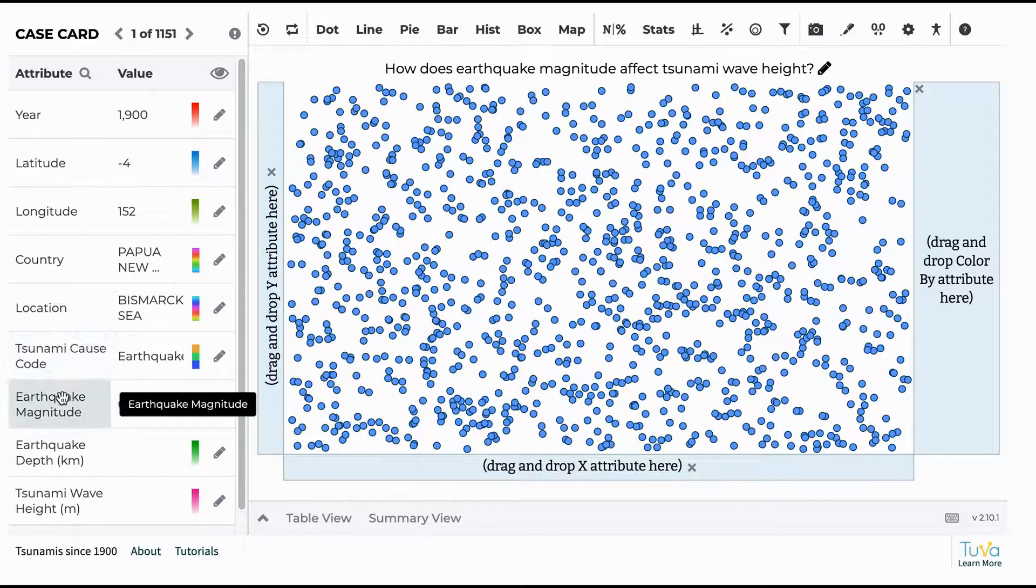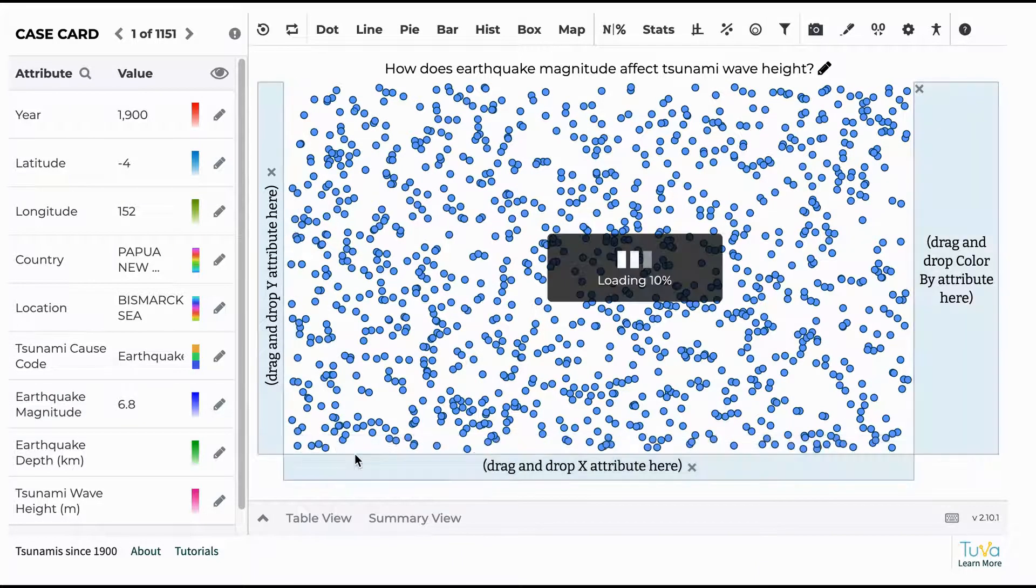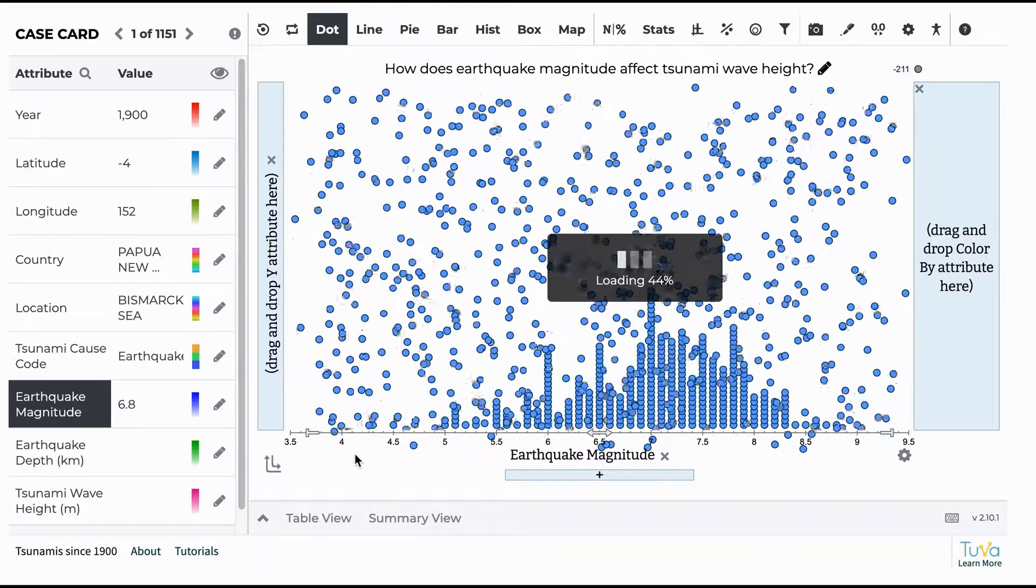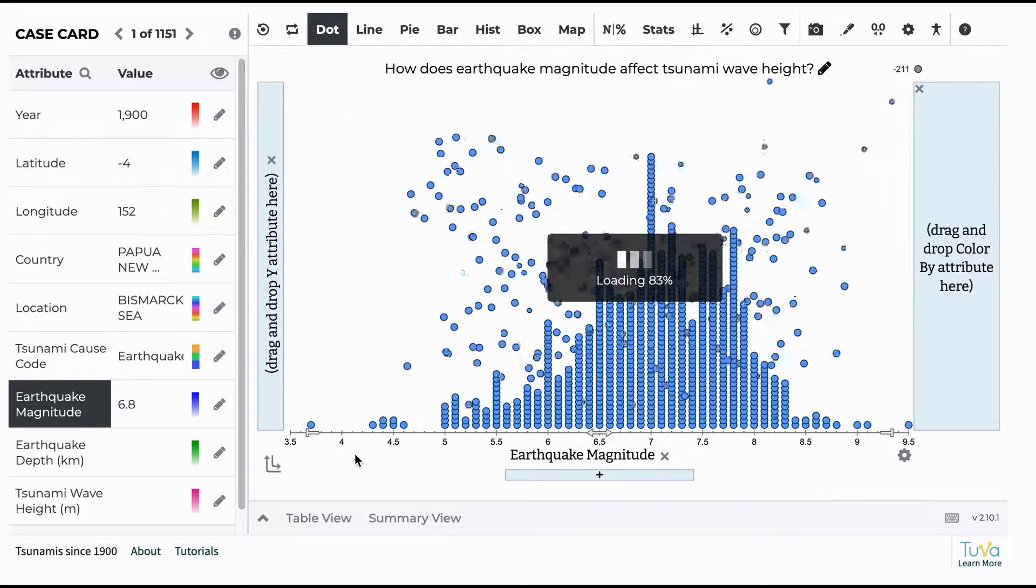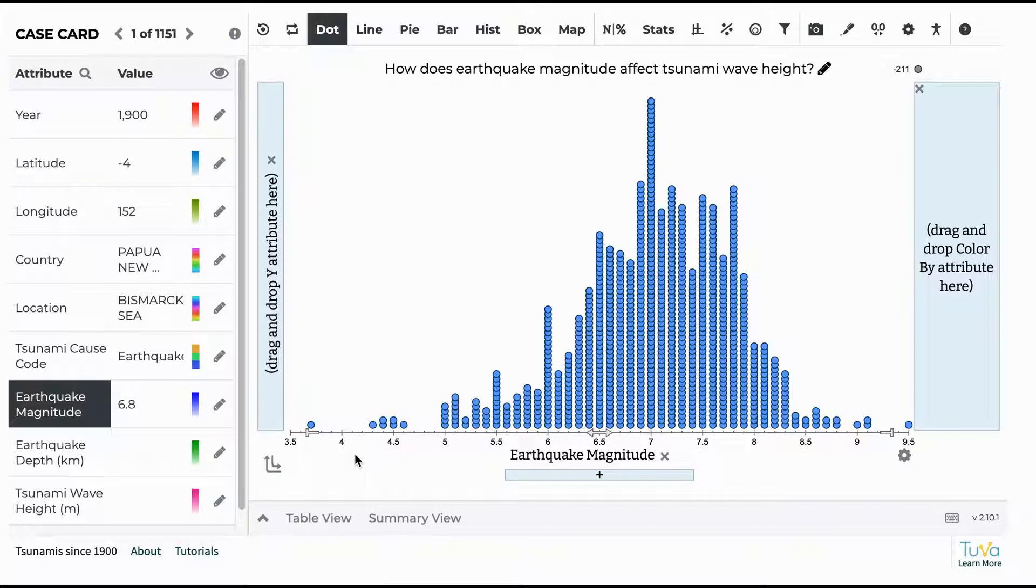So when you get to TUVA and you want to actually build a graph, if you've completed the sentence, how does earthquake magnitude affect tsunami wave height, you'll want to click magnitude over to the x-axis. And you'll see all the cases of tsunamis since 1900 start to move. So it just gives you a histogram of those cases.